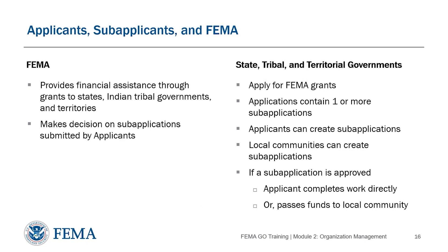Once an award is granted, the applicant becomes a recipient and the sub-applicant becomes the sub-recipient. For states and territories, the money is generally disseminated to their sub-recipients. If you're a federally recognized Indian tribe, your sub-applications are most likely going to be managed by the grant applicant who is also the sub-applicant. In the legacy system, we used to call that the grantee acting as sub-grantee.